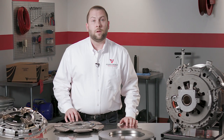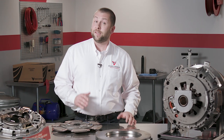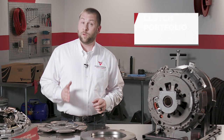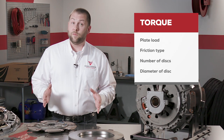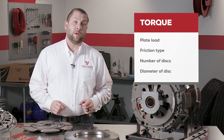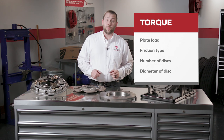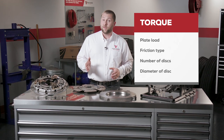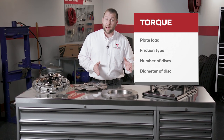Let's talk about clutch specs. Clutches are rated by torque capacity, which is calculated using plate load, friction type, number of discs, and the diameter of the clutch disc. Changing any of these attributes will increase or decrease the clutch's torque capacity.